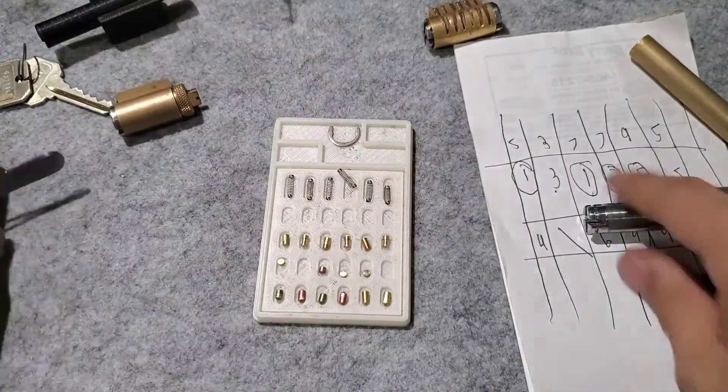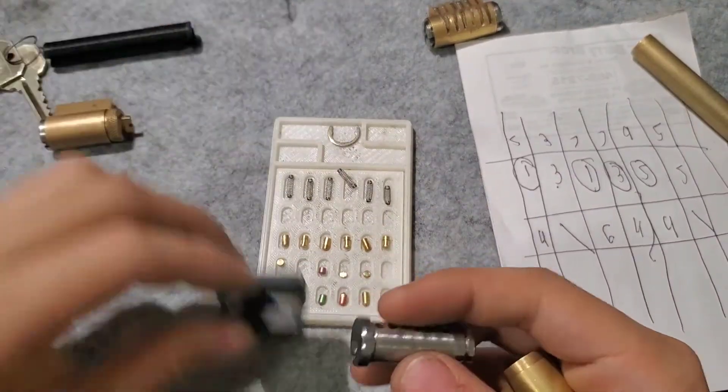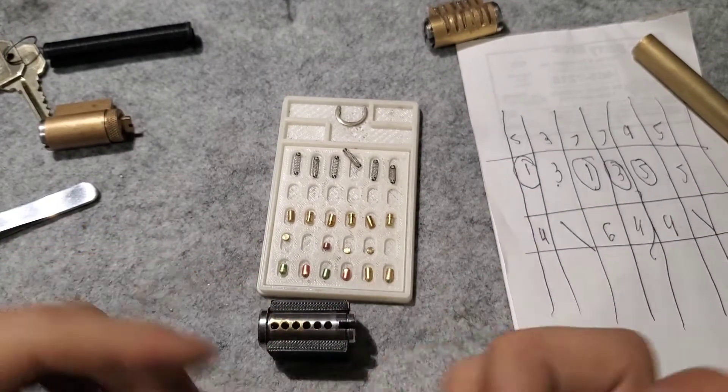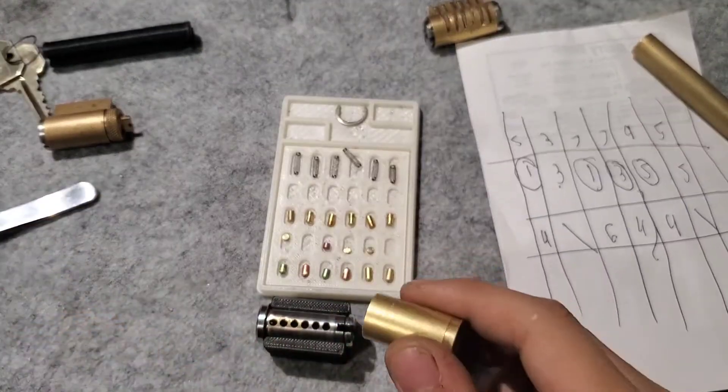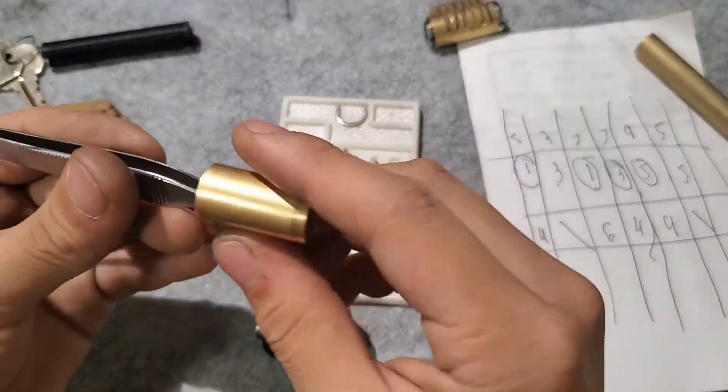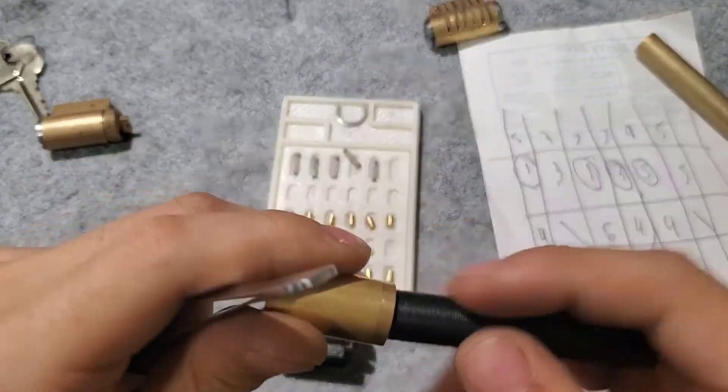So this is how our plug is going to be oriented. This thing comes in really handy for master keying. I'm going to take our spring, put it in chamber six, and put a driver in.